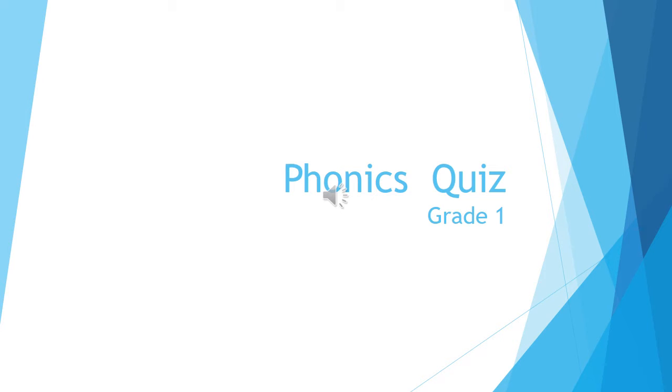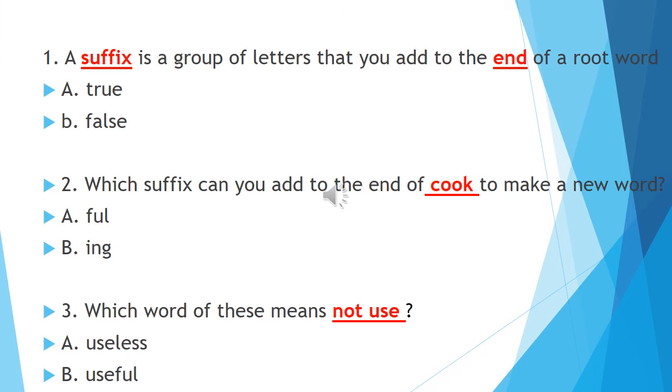Now grade one, get your pencil ready and let's get started. On the slide, choose the correct answer. You have two options. Number one: a suffix is a group of letters that you add to the end of a root word. A: true, B: false.